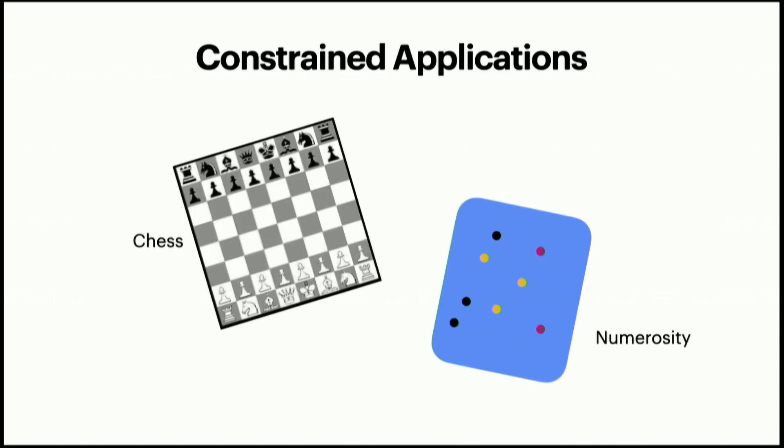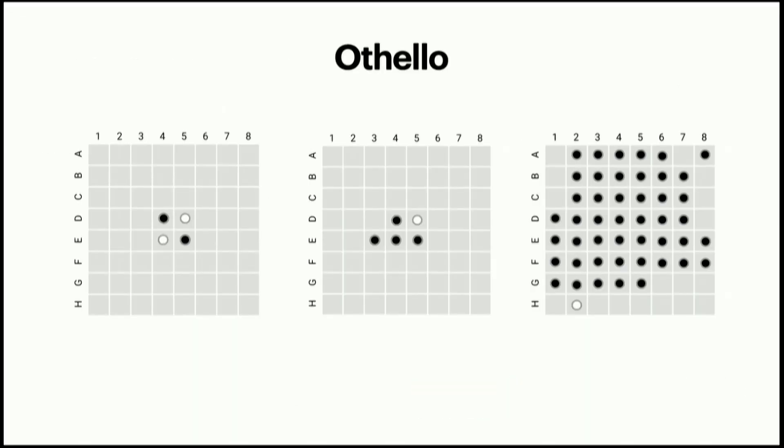Instead, to build methods for understanding complex models, we sometimes look at smaller worlds — constrained applications like chess or numerosity. Numerosity is looking at how many items there are in an input. This gets me to the paper I wanted to talk about today, published by my amazing collaborators and I, where we look at Othello, also known as Reversi.